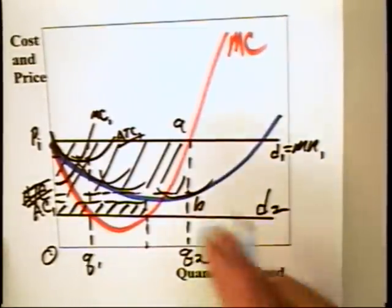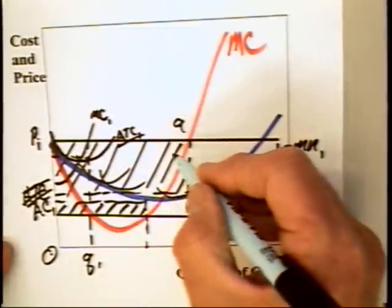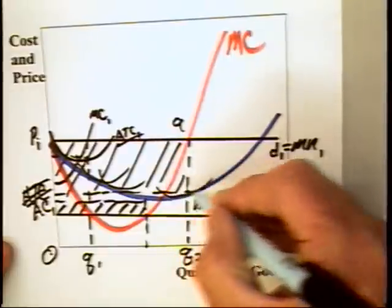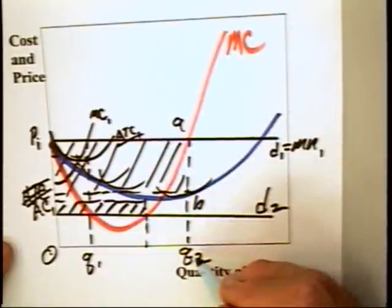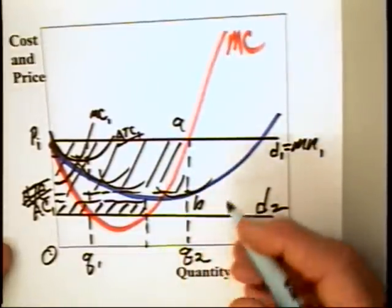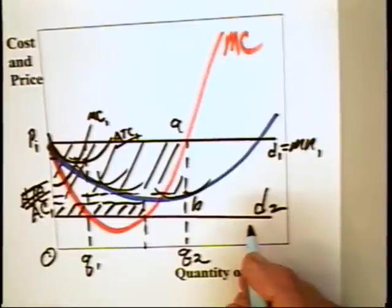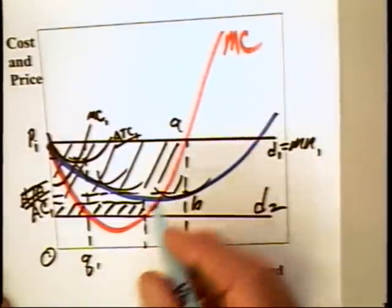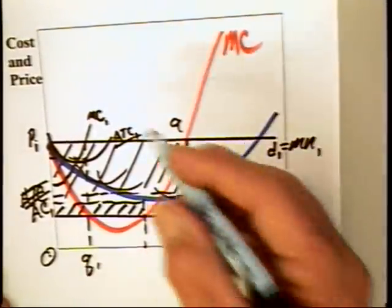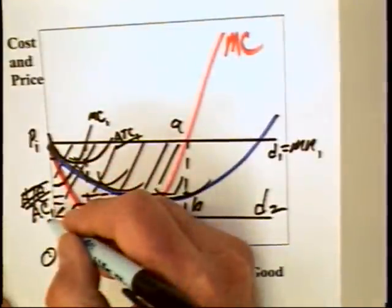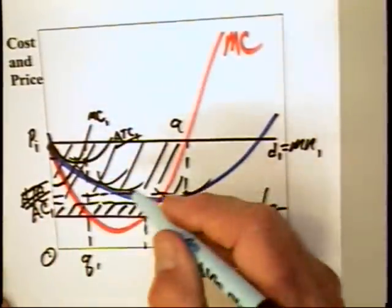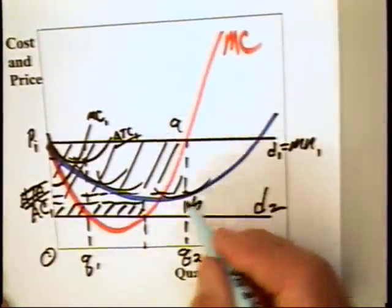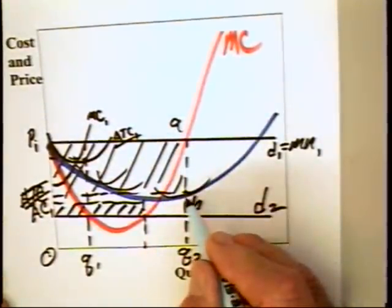So the firm, in contemplating expanding its scale of operation to quantity Q2, has got to realize that other firms might indeed be expanding their scale of operation. And that of course can mean that the price can fall, which of course means that the firm has got to have second thoughts about expanding the scale all the way to here, which means it's going to restrict its scale of operation.